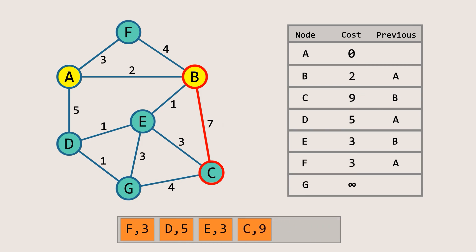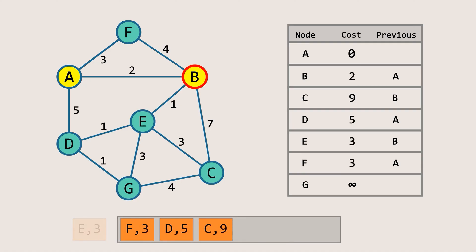Now that all the neighbors of node B have been visited, we pop the next element. Both nodes E and F have the same priority of 3, and which one to choose depends on how the priority queue is implemented. Let's remove node E from the queue and visit all of its neighbors. Let's visit node G first — remember, the order of visiting neighbors does not matter. The cost of reaching G via E is 6, which is less than infinity, so we update it to 6, set the previous node to E, and add G to the queue.